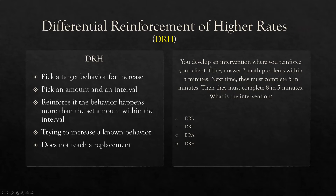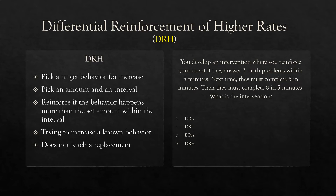The last three: RBTs, be aware of these. BCBAs have to know them. Let's talk about differential reinforcement of higher rates — DRH. For DRH, DRD, and DRL, we're not necessarily teaching a replacement behavior. We're targeting a single behavior. In this case, higher rates — it's in the name. What do you think we're doing? We're picking a target behavior and trying to increase it.